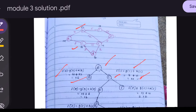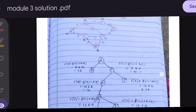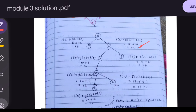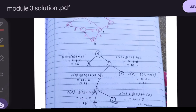The neighbors of node C are D and E. We solve f(D) and f(E). For f(D): g(D) = path from A to C plus C to D = 3 + 7 = 10, and h(D) = 6, so f(D) = 10 + 6 = 16.